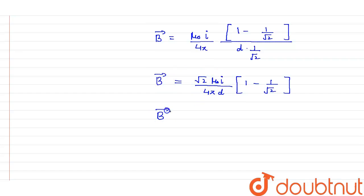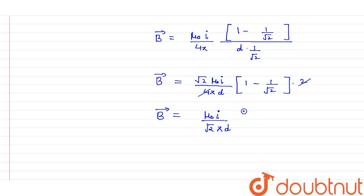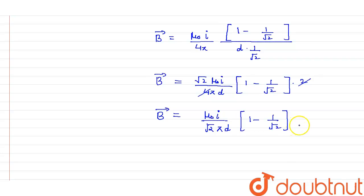After full simplification, the 2s cancel out and the final answer is: B = μ₀I / (√2 · π · d) × (1 − 1/√2). This is the correct answer for the magnetic field at point P.